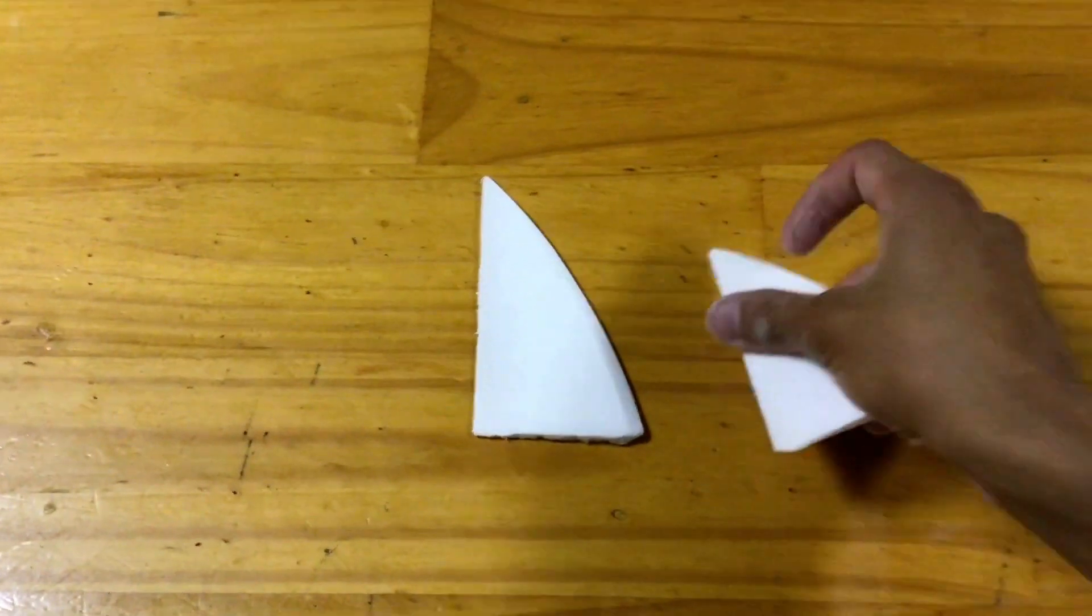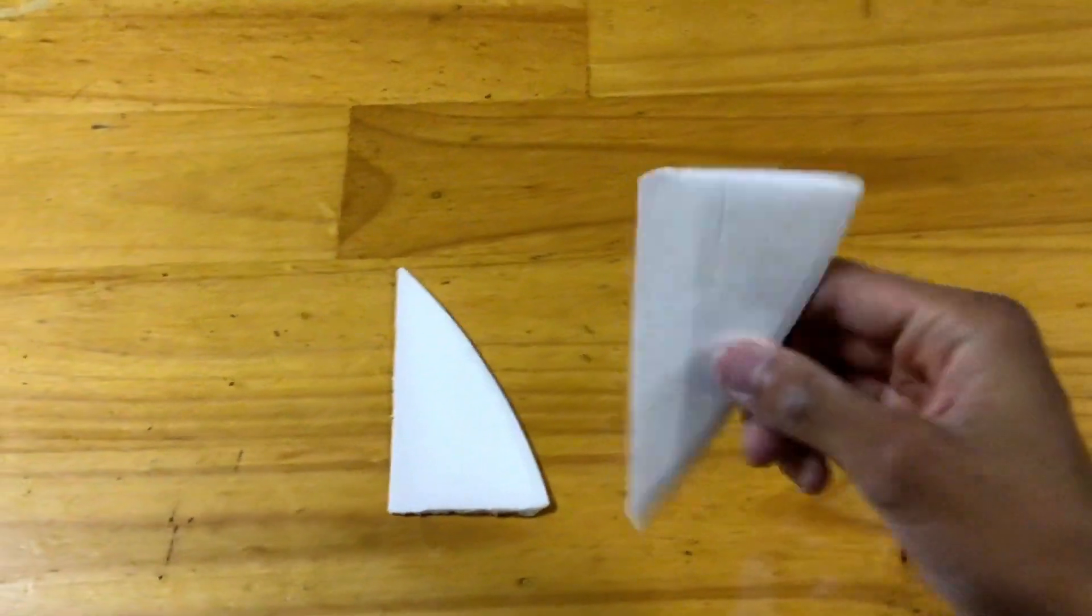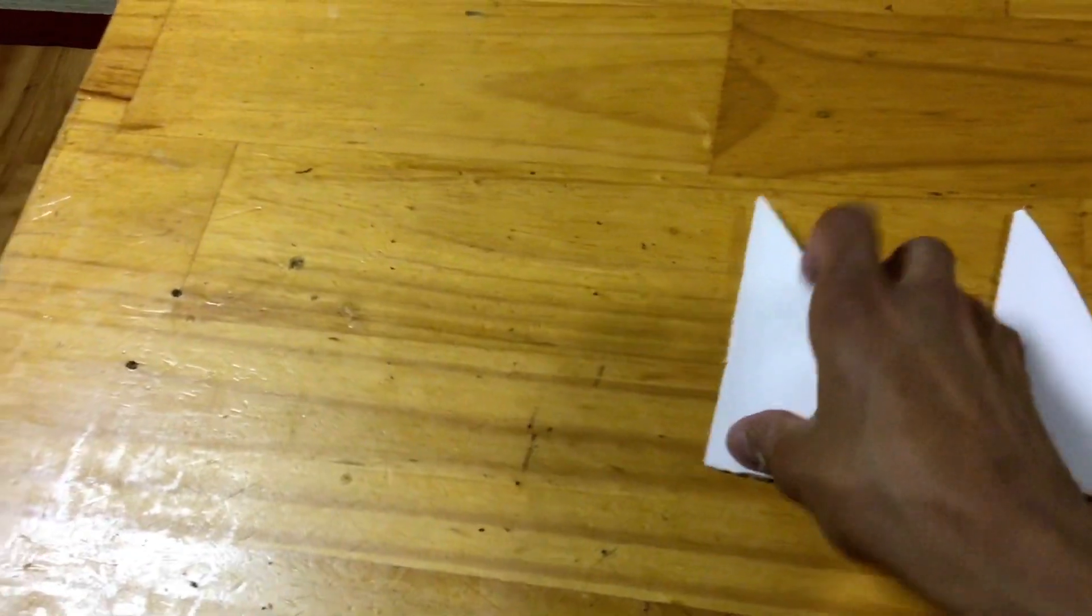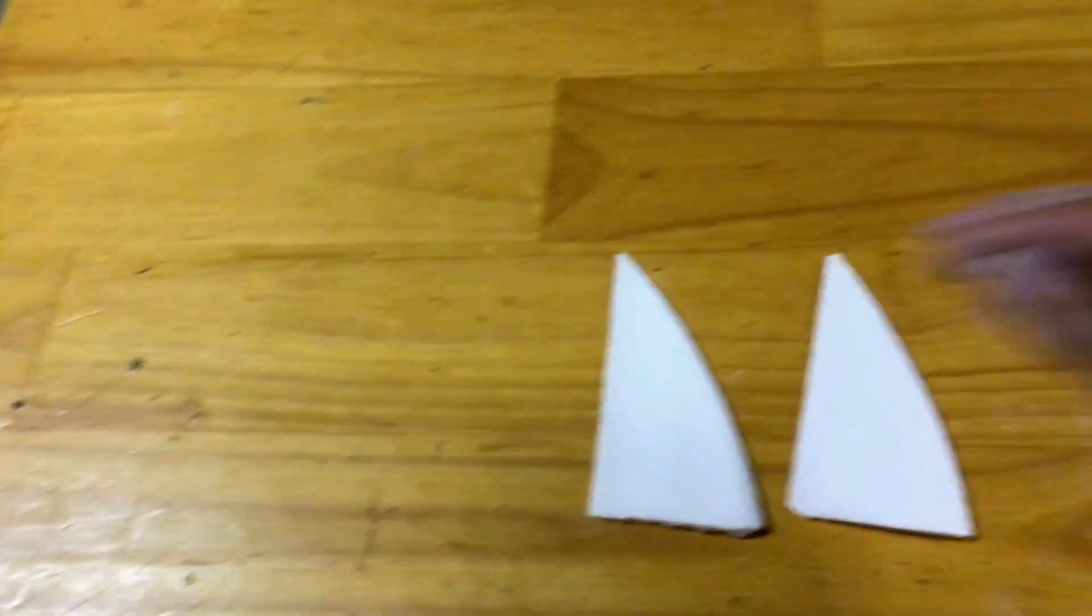The next step was to roughly shape some test wings out of Adam's foam board, such that I could cover them with epoxy resin and use acetone to remove the foam, and hopefully end up with some nice resin hollow core wings.